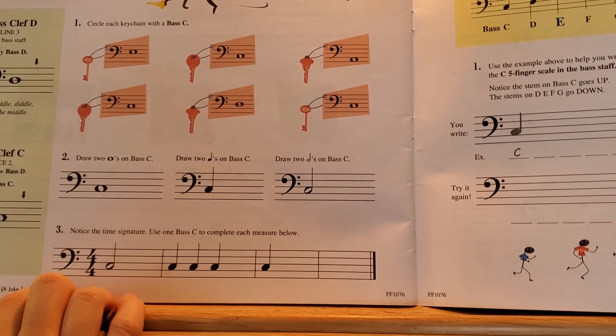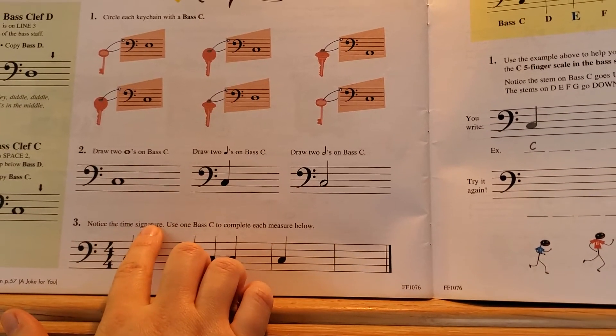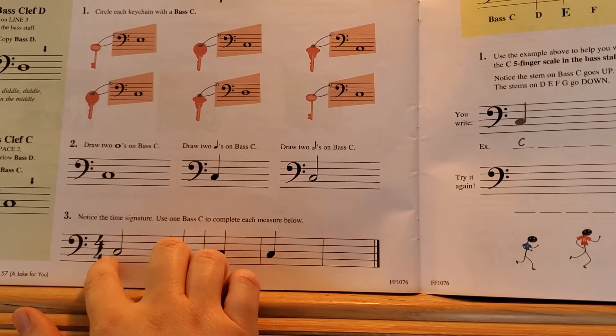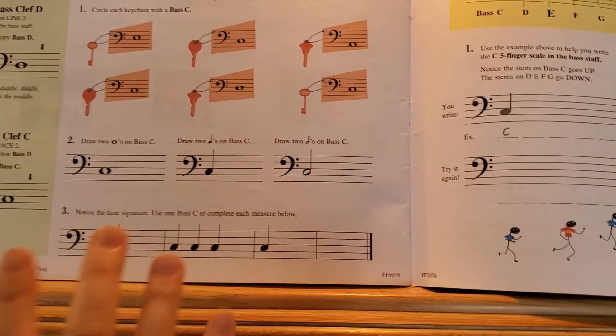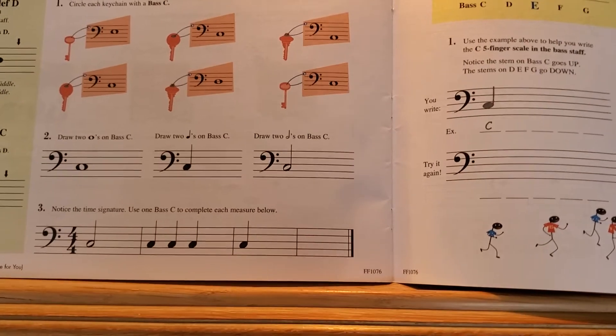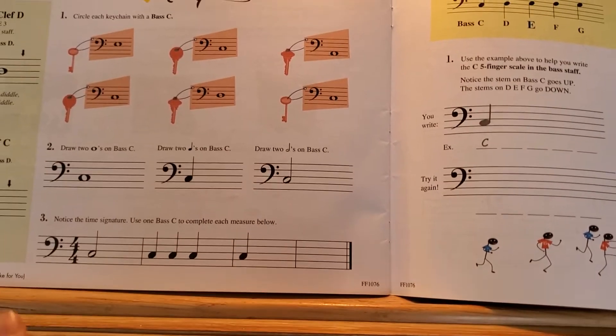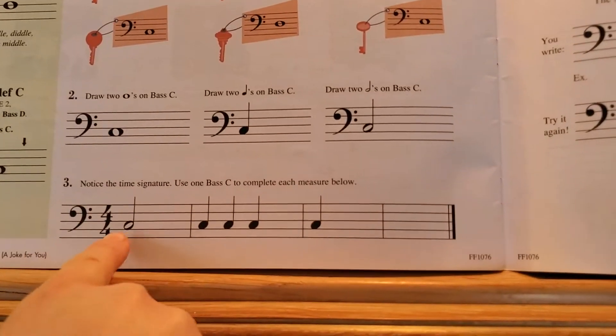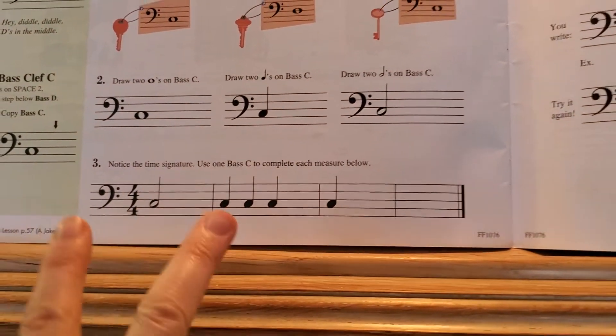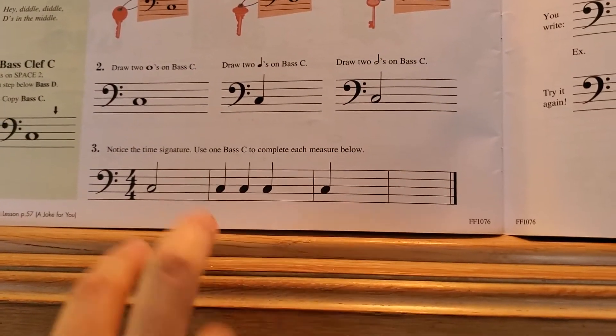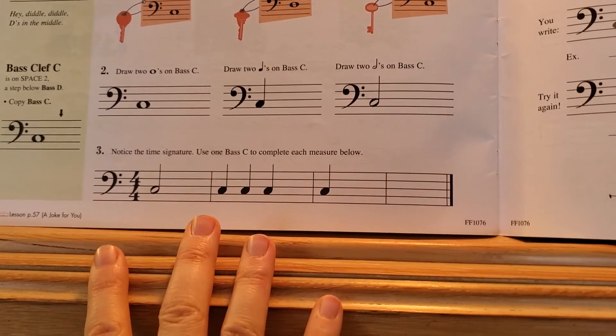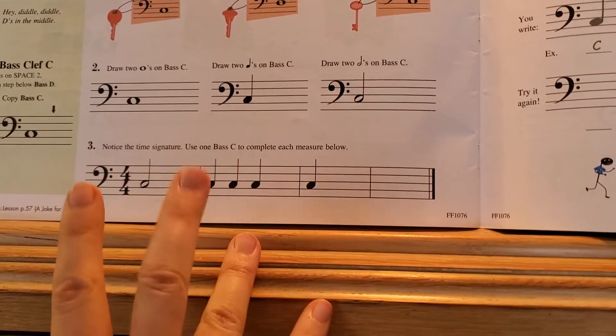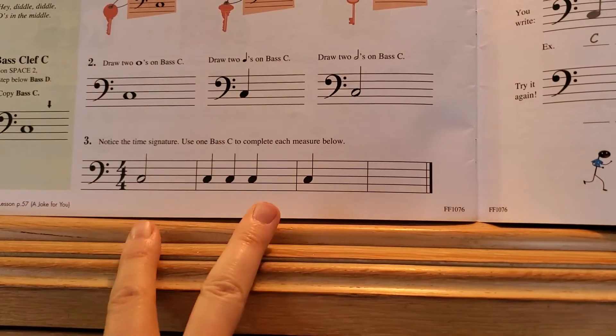And then you can do three down here. Notice the time signature - this is four four. So what this means is you're going to have four beats in every measure. So you have to use one bass C to complete each measure. In the first measure, you have two beats so far. If you need four beats, how many more would you have to have to get to four? You would need two more.